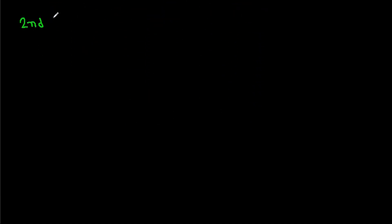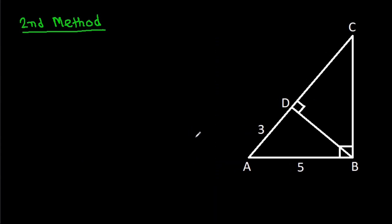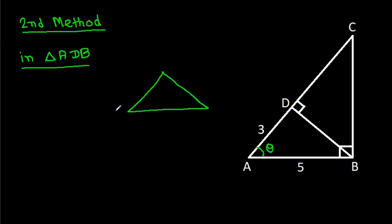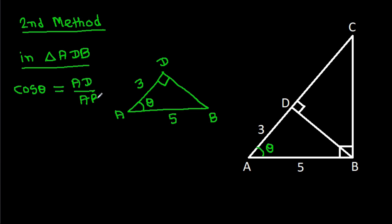The second method. Suppose this angle is theta. In triangle ADB, this angle is theta, this angle is 90 degrees, AD is 3, and AB is 5. So cos theta equals AD by AB, which is 3 by 5.